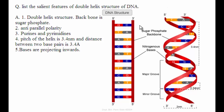These are the two polynucleotide chains, and you can see here this is the backbone, which is constituted by sugar phosphate. These two chains possess anti-parallel polarity — one polynucleotide chain runs in the five prime to three prime direction, and the other runs in the three prime to five prime direction.